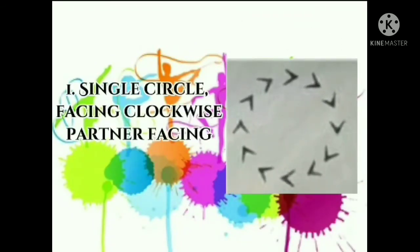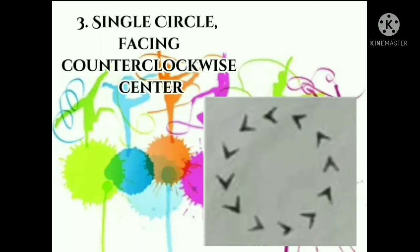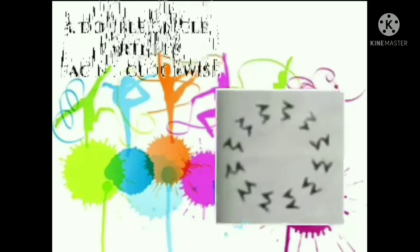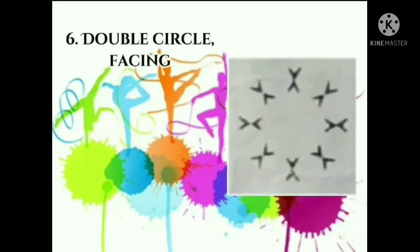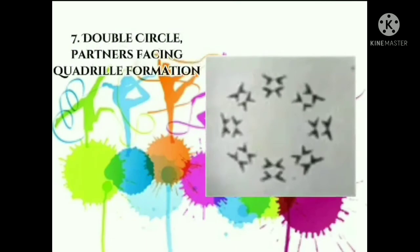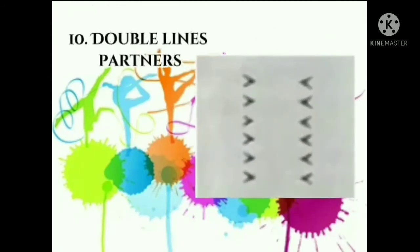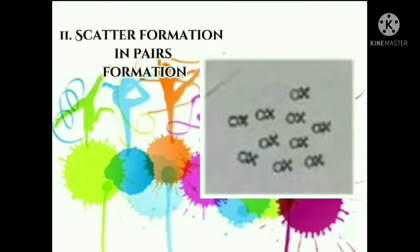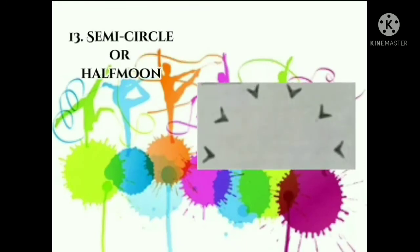Formations commonly used in rhythmic activities: 1. Single circle, facing clockwise, partner facing. 2. Single circle. 3. Single circle, facing counterclockwise, centered. 4. Single circle, facing. 5. Double circle, partners facing clockwise. 6. Double circle, facing. 7. Double circle, partners facing, quadral formation. 8. Square formation. 9. Double lines, facing front. 10. Double lines, partners. 11. Scatter formation in pairs. 12. Several lines or long open. 13. Semi-circle or half moon.